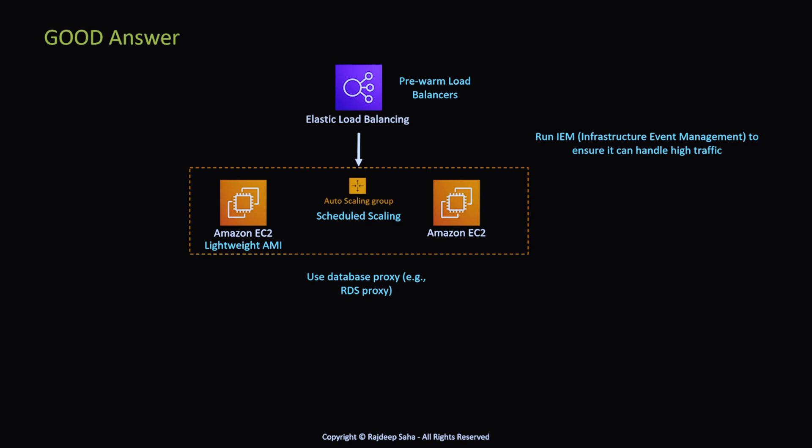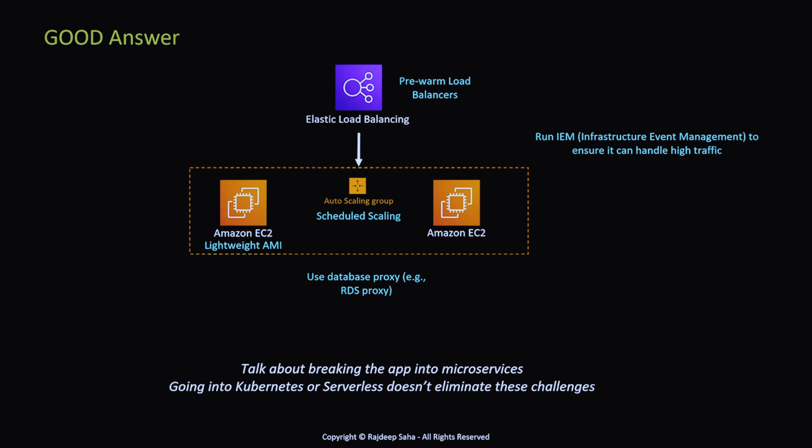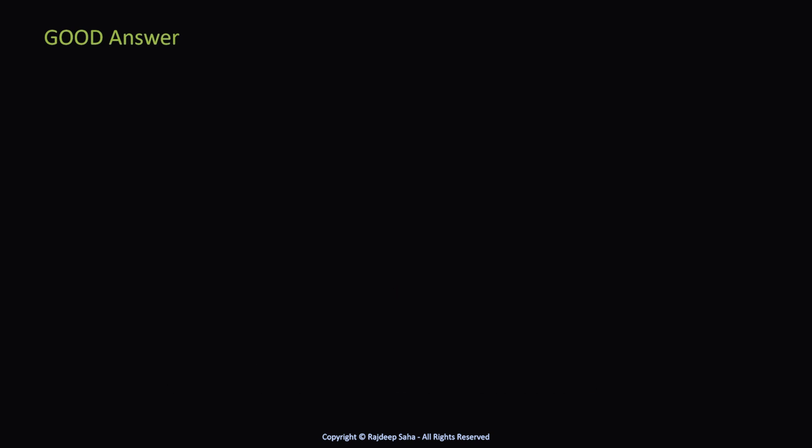This is something you only know from real-world projects: you should run IEM — Infrastructure Event Management — before a big event. IEM is run by your AWS account team; it simulates high traffic for a specified number of hours and checks if the application holds up, so you can tweak things. Beyond that, consider breaking the application into microservices. Also, a common misconception is that moving to Kubernetes or serverless makes all scaling challenges go away — which is not true. Even in Kubernetes you may need over-provisioner, and in serverless you need provisioned concurrency among other things.